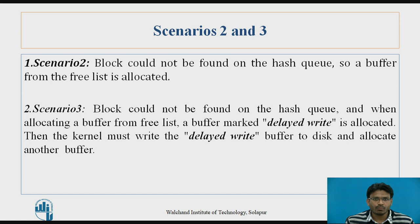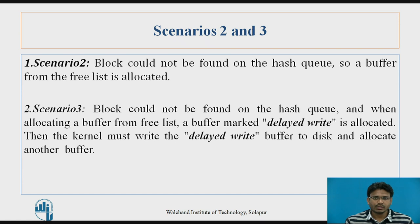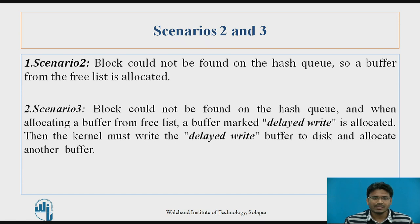Scenario 2: the block could not be found on the hash queue, so a buffer from the free list is allocated. In Scenario 3, the block could not be found on the hash queue, and when allocating a buffer from the free list, that buffer is marked as a delayed write. The kernel must write the delayed write buffer to disk and allocate another buffer. We will see this delayed write concept in detail when explaining scenario 3.